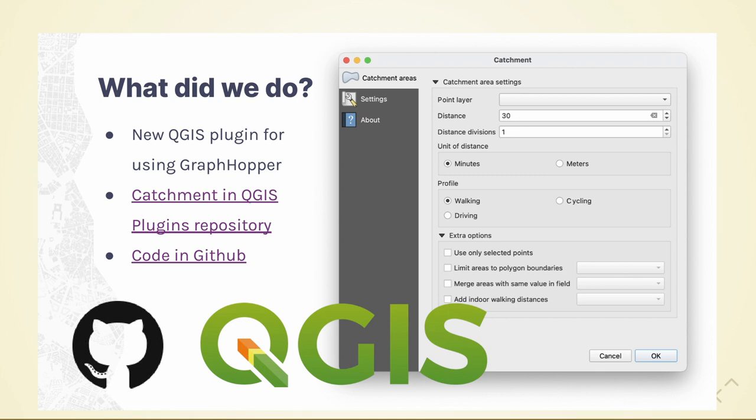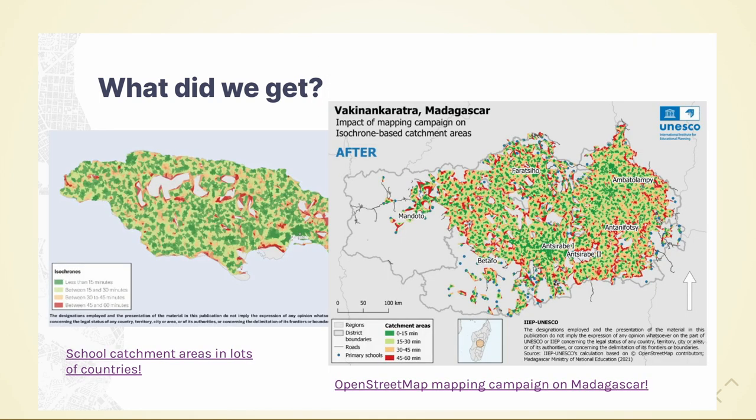I have time to show you some results. On the left, there are results for Jamaica, which is pretty nice — there's enough OpenStreetMap data in Jamaica so that you can really see the catchment areas of schools around the country. The green areas are the ones where people have access to a school less than 15 minutes away, and the red areas are those where you have to walk more than 45 minutes to get to the nearest school.